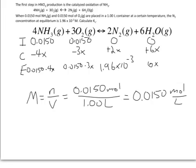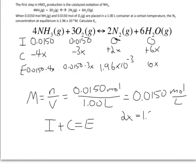The way I figure out x is I use the nitrogen column of my ICE table. It's true for all reactants and products that the initial plus the change is equal to the equilibrium. In the case of the nitrogen, I know that 0 plus 2x is equal to 1.96 times 10 to the minus 3, so 2x equals 1.96 times 10 to the minus 3.